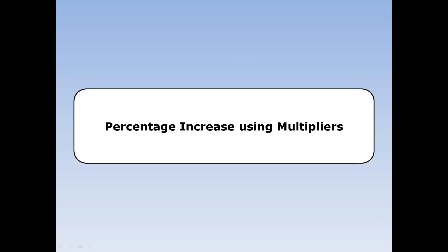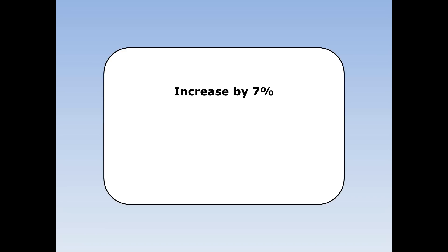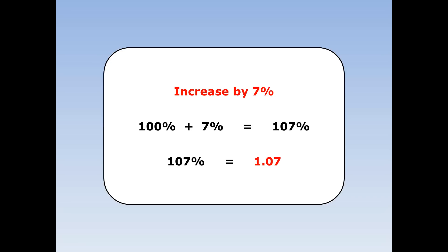Percentage increase using multipliers. To increase something by 7%, I want the original 100% plus an extra 7%. 100% plus 7% is 107%. 107% as a decimal is 1.07. So to increase something by 7%, multiply by 1.07.